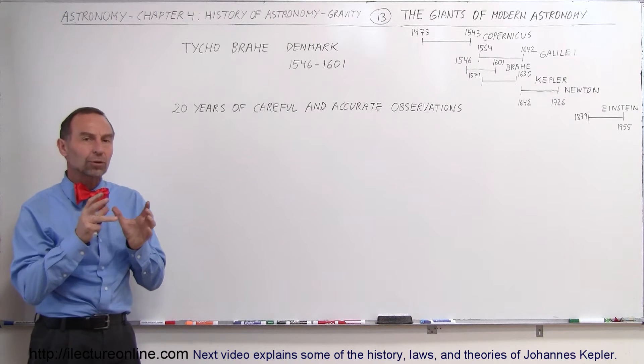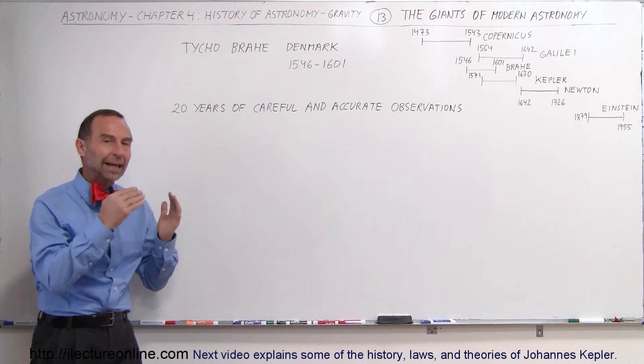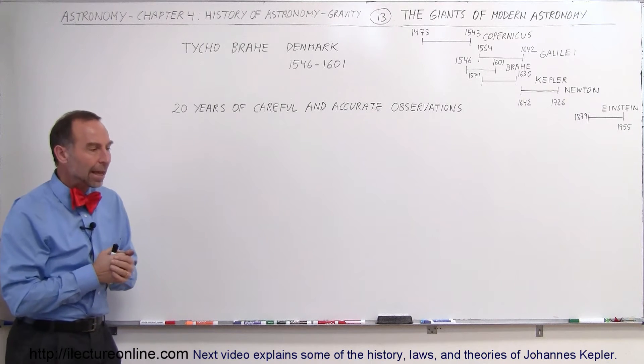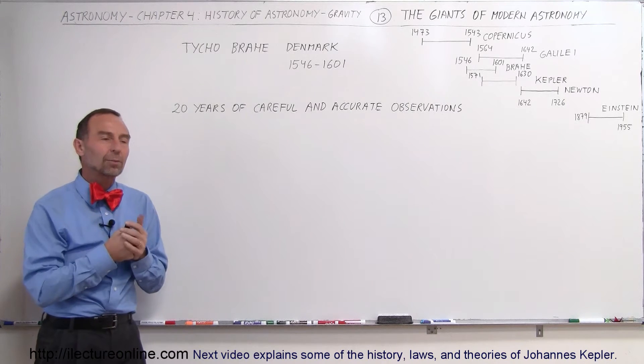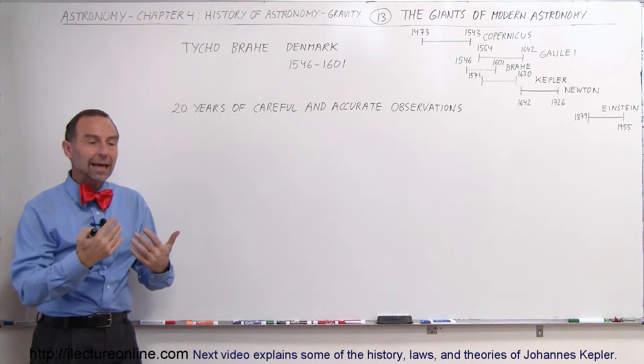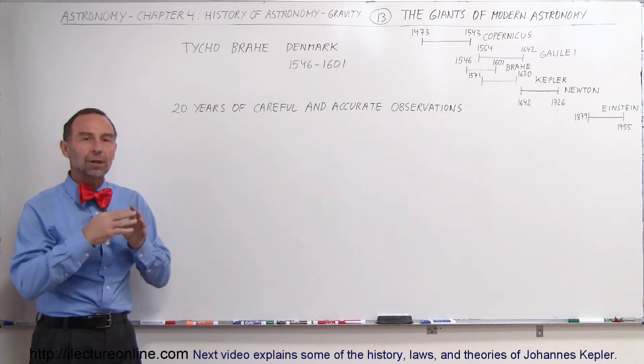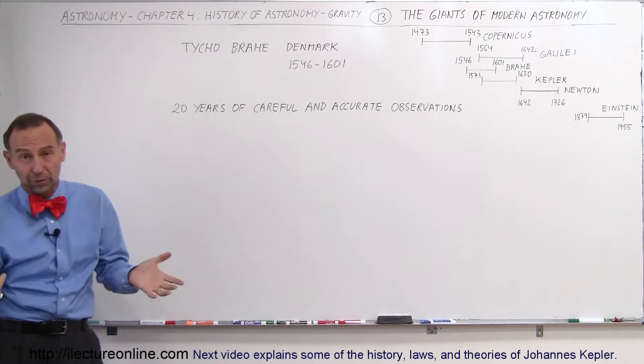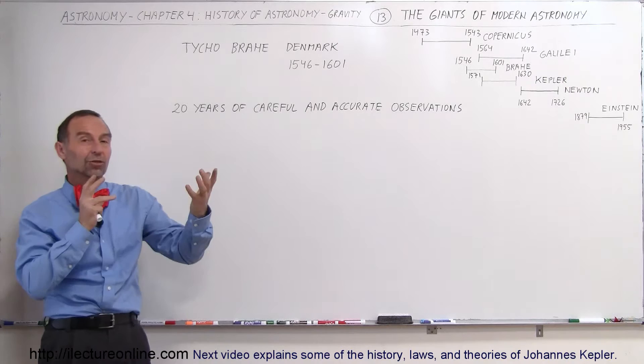He ended up living in a place which currently belongs to Sweden, but back then it was part of Denmark. And the king was so impressed with Tycho Brahe that he gave him a lot of money, and with all the money he received from the king, he built himself an observatory, of course, not in terms of what an observatory looks like today with a telescope.